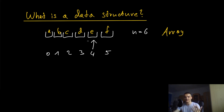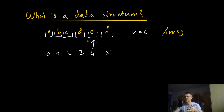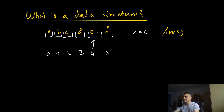I can access e in constant time. We're going to talk about runtime complexity in a future episode, but this would be an example of constant time. I just say I want to get to index four, and I get to index four. It's not hard; I don't have to iterate over all the elements that come before e.